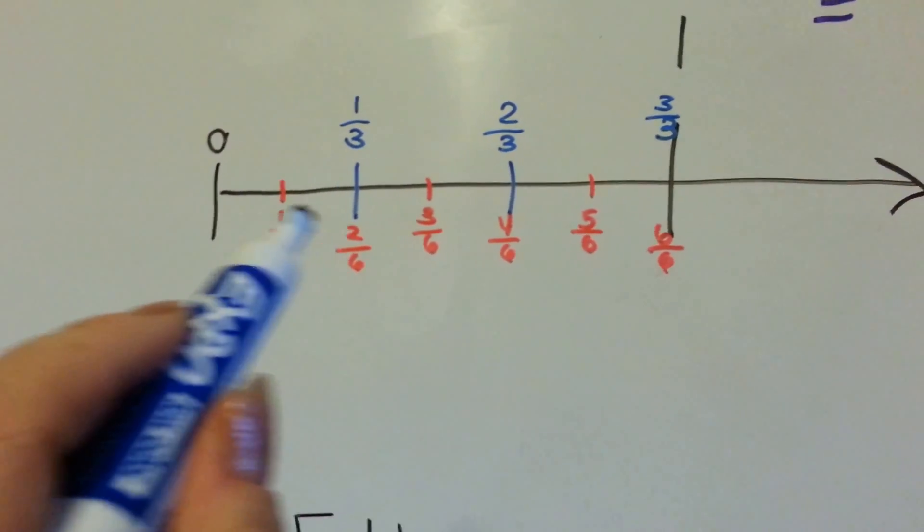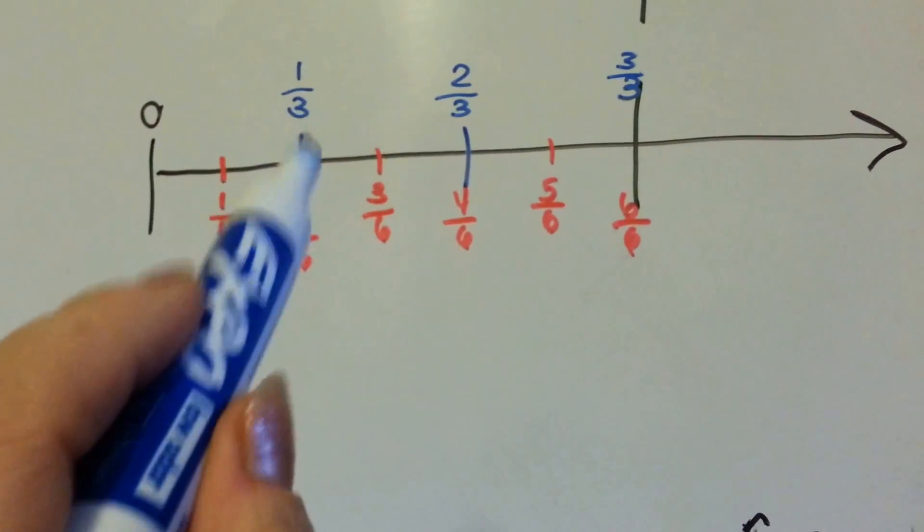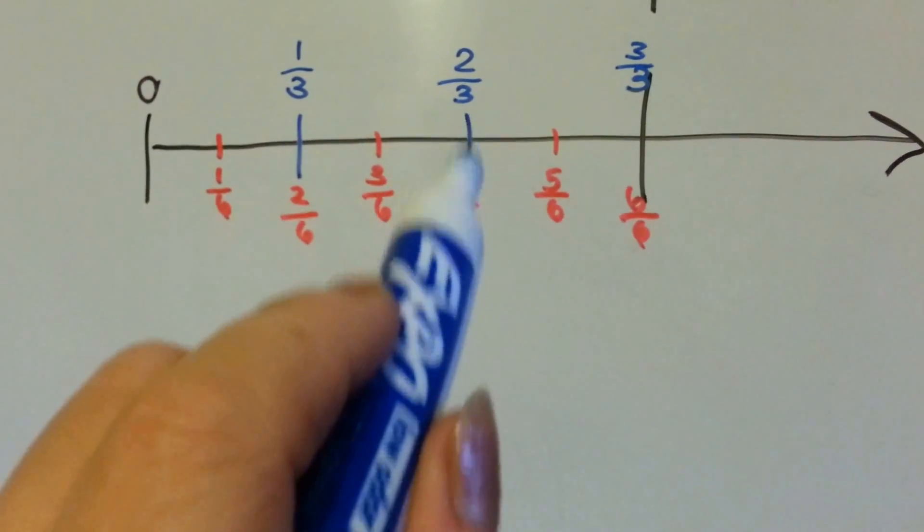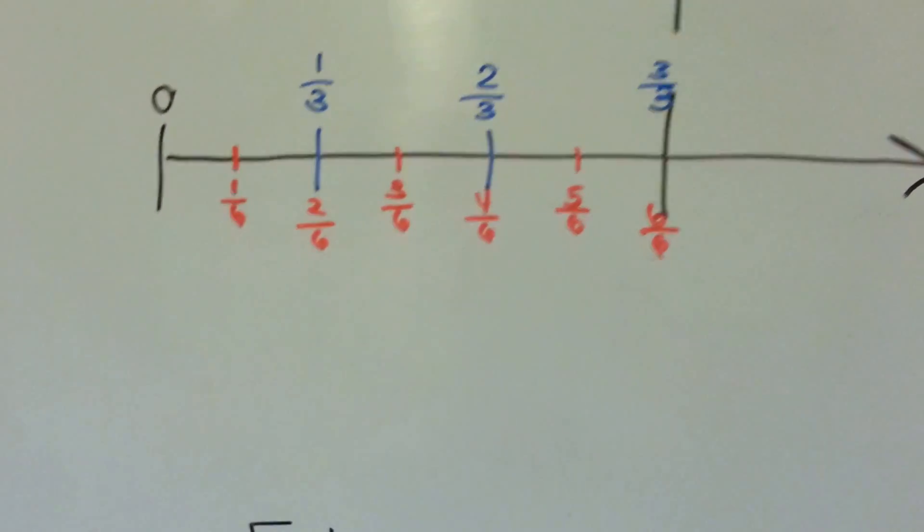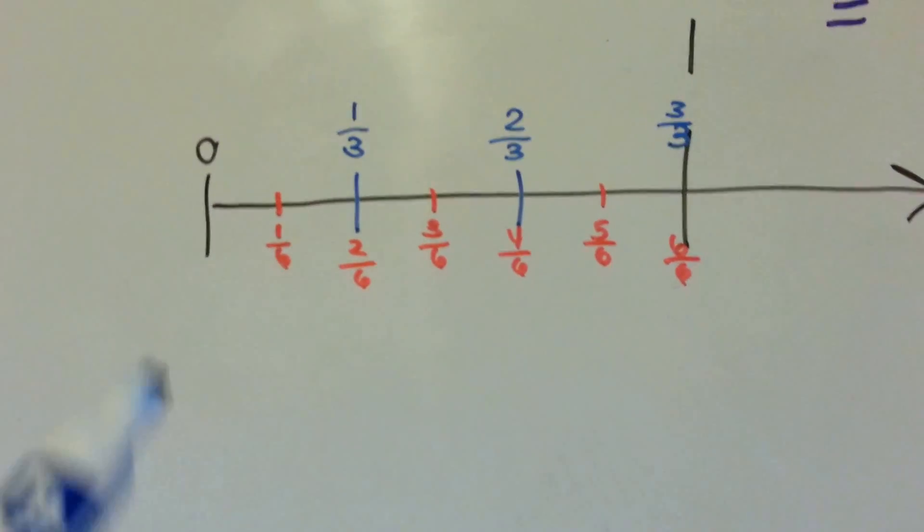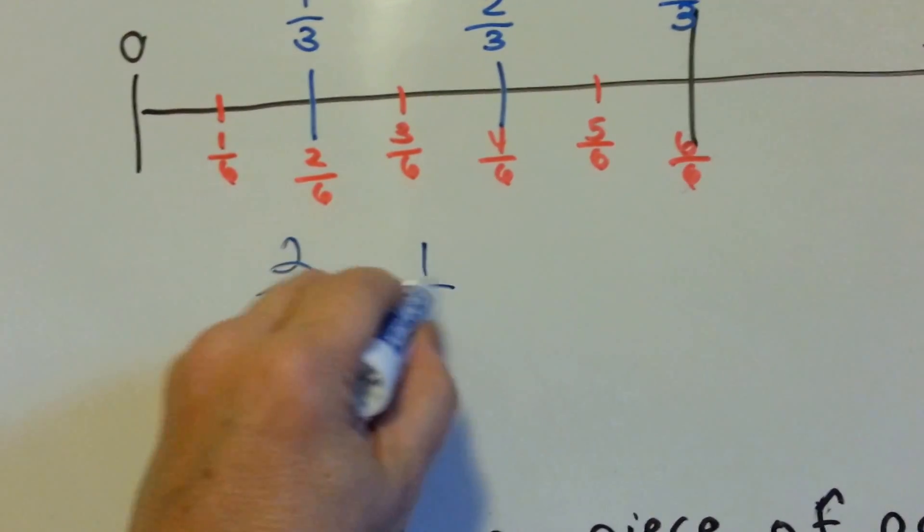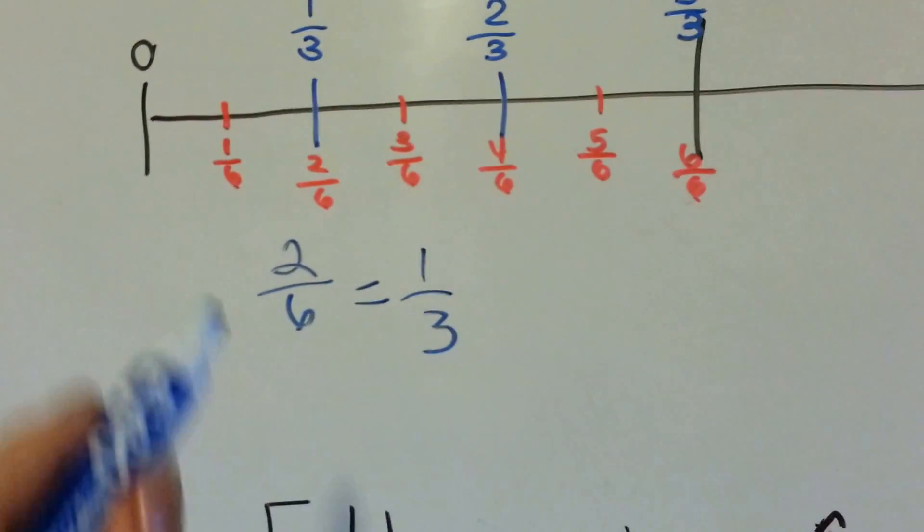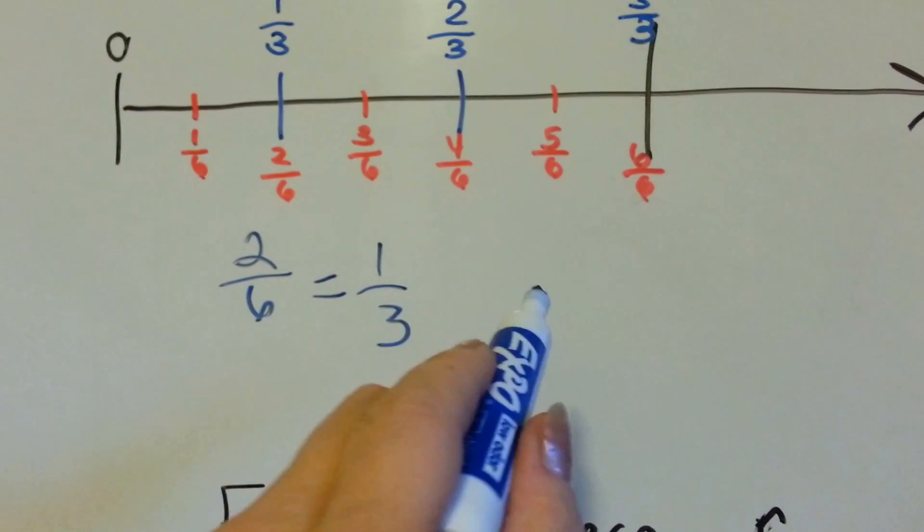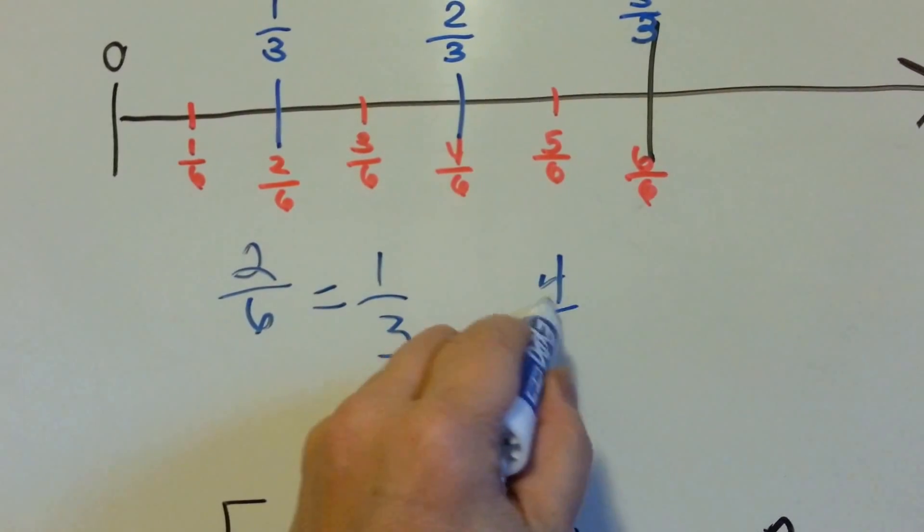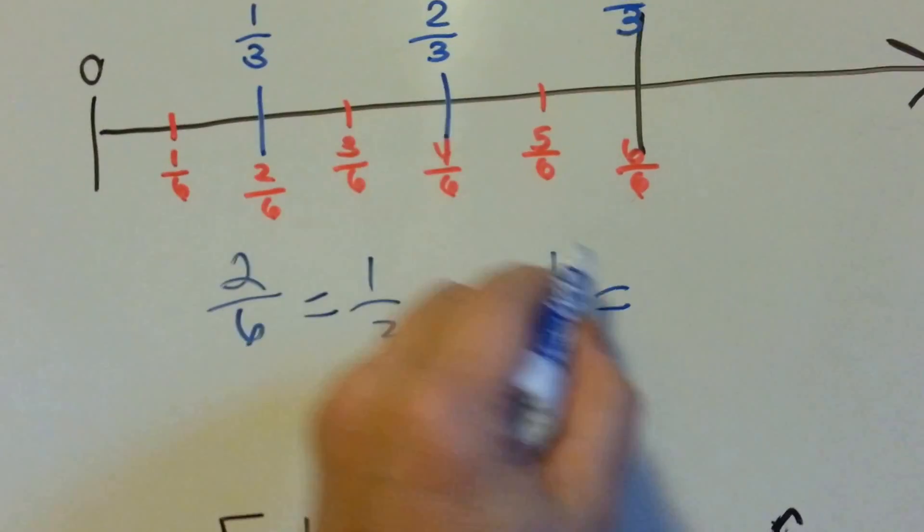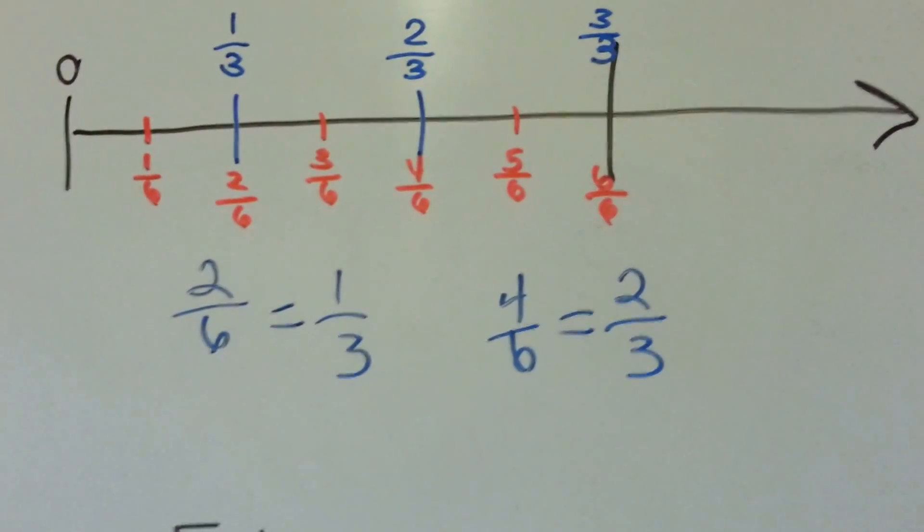There are two sixths inside of each third. Two sixths is equal to one third. Four sixths is equal to two thirds.